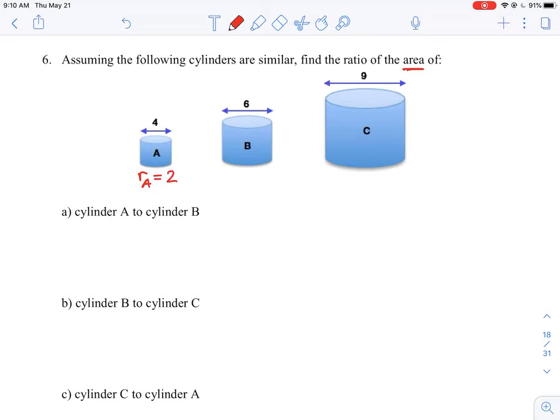It's half of the diameter of 4. The radius of B is equal to half the diameter of 6, which is 3. And the radius of C is equal to half the diameter of 9, which is 4.5.